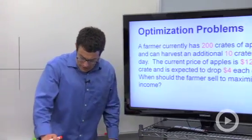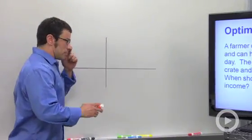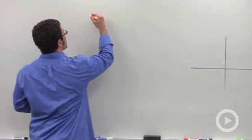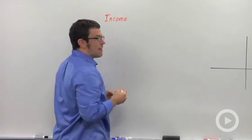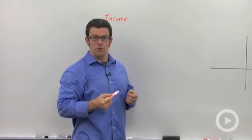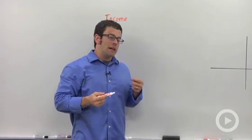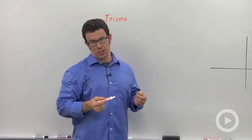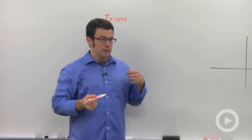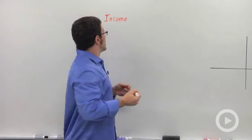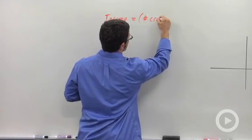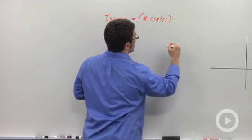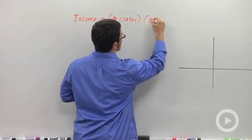Let's back up for a second. Income is our function, and that's what we want to maximize over time. When should she sell? The variable is going to be the number of days. Income is the number of crates she sells times the price per crate.